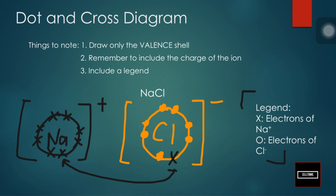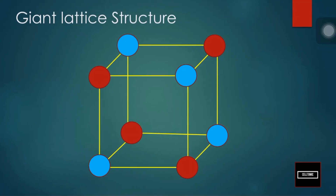One way to know how many cations and anions to draw is by looking at the formula. In this case it's NaCl. If it were magnesium chloride, MgCl2, you would draw two chlorines and one magnesium. Looking at the formula tells you how many ions you are required to draw. All these ions form a giant lattice structure, held together by strong electrostatic forces of attraction between the two oppositely charged ions.